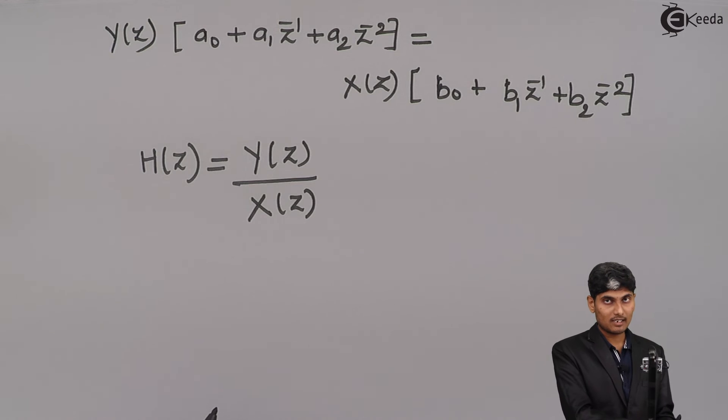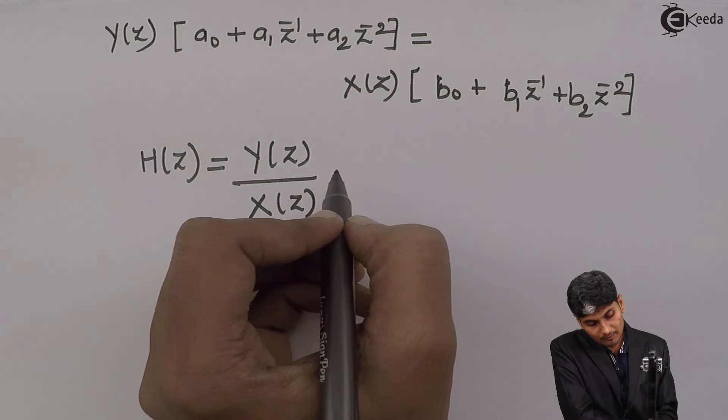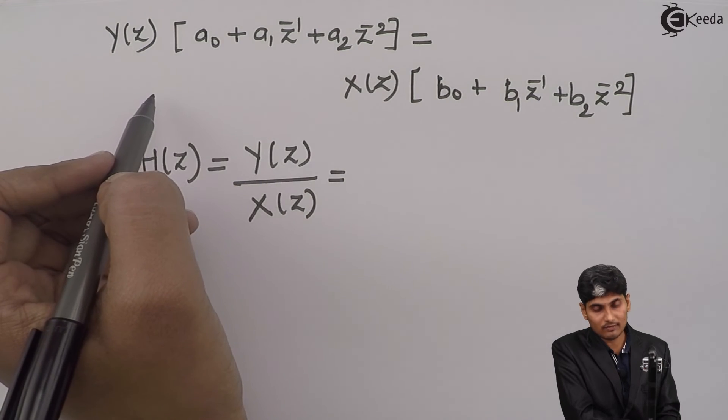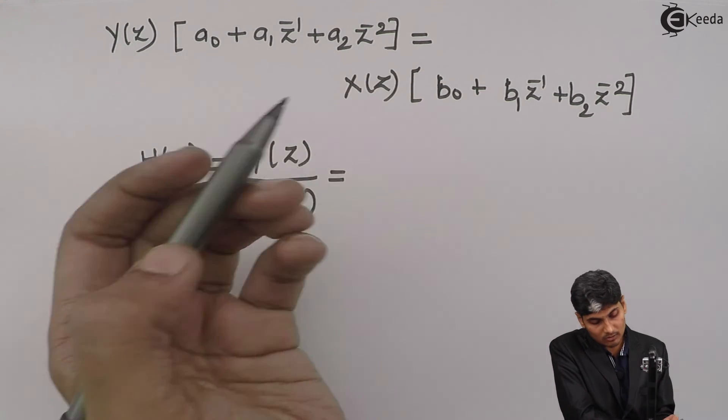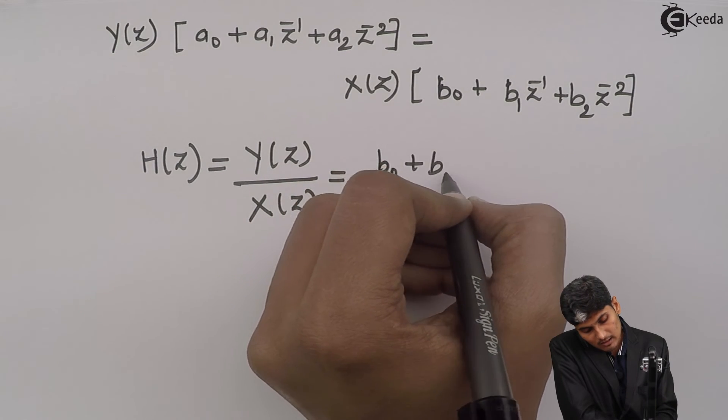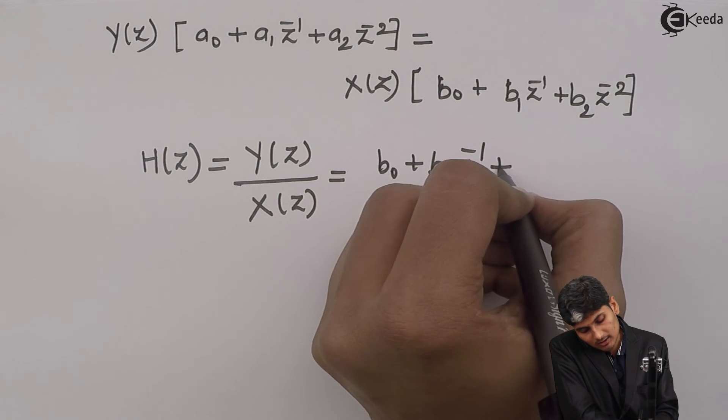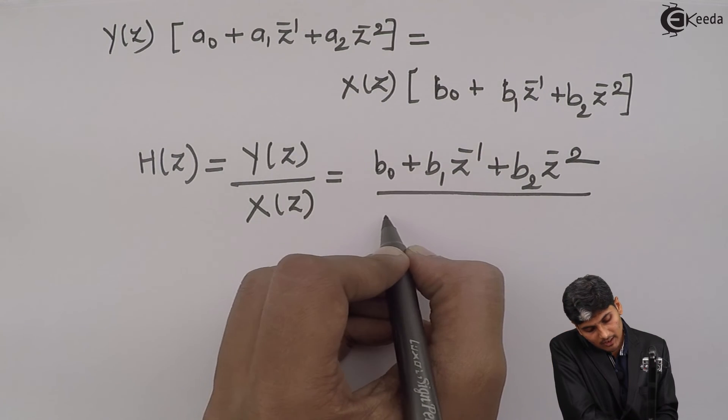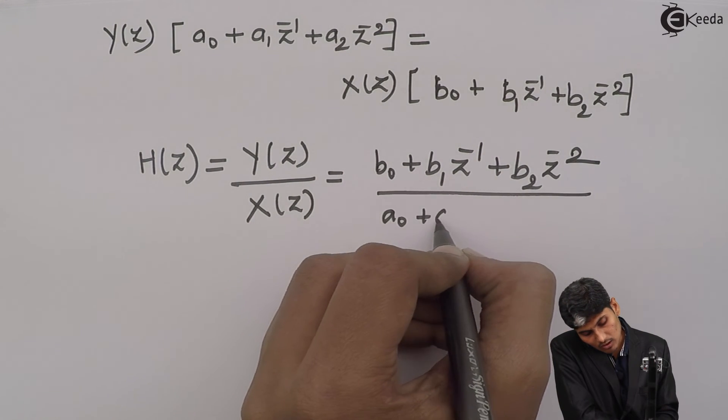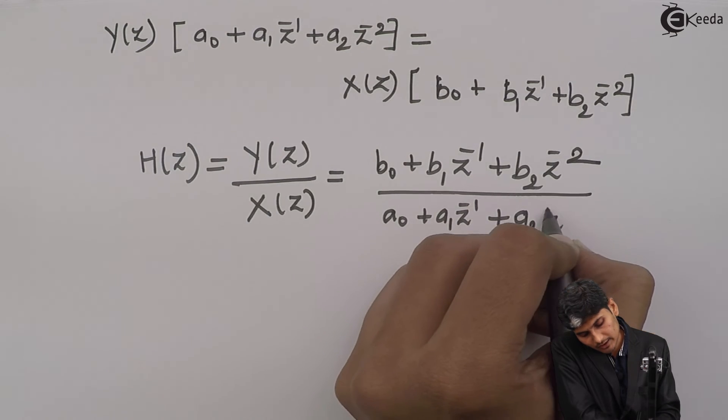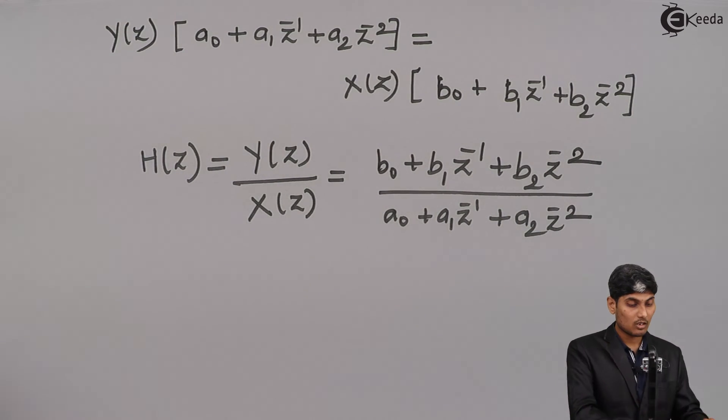So, it says H(z) is the ratio of output upon input which is equal to, I brought X(z) down, Y(z). Then I have to get this thing down. So, I get here as b_0 plus b_1 z inverse plus b_2 z raised to minus 2 divided by a_0 plus a_1 z inverse plus a_2 z raised to minus 2.